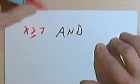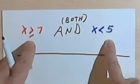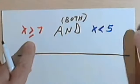So let's look at this on a number line. Remember, AND means I've got to have both of these what we call conditions: the condition that x is greater than or equal to 7, and the condition that x is less than 5.